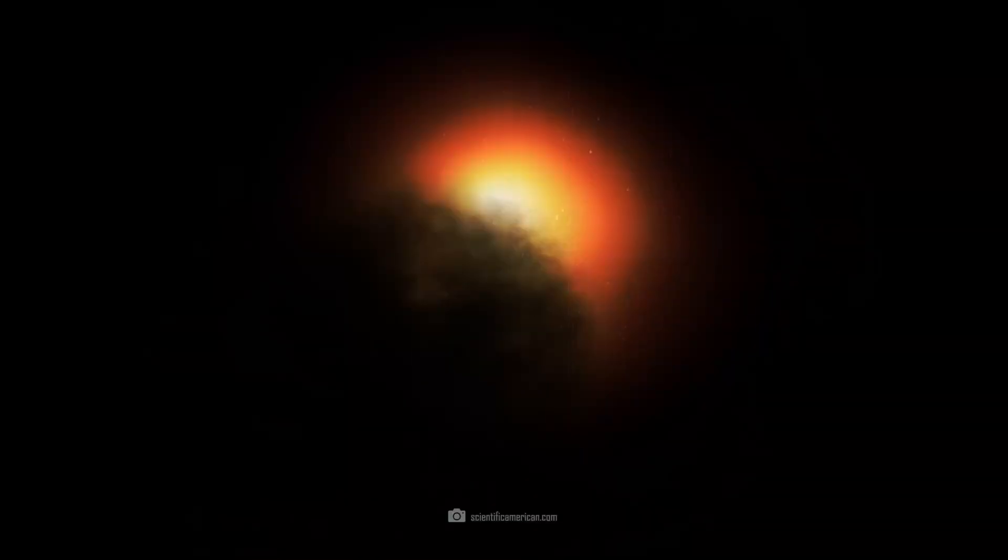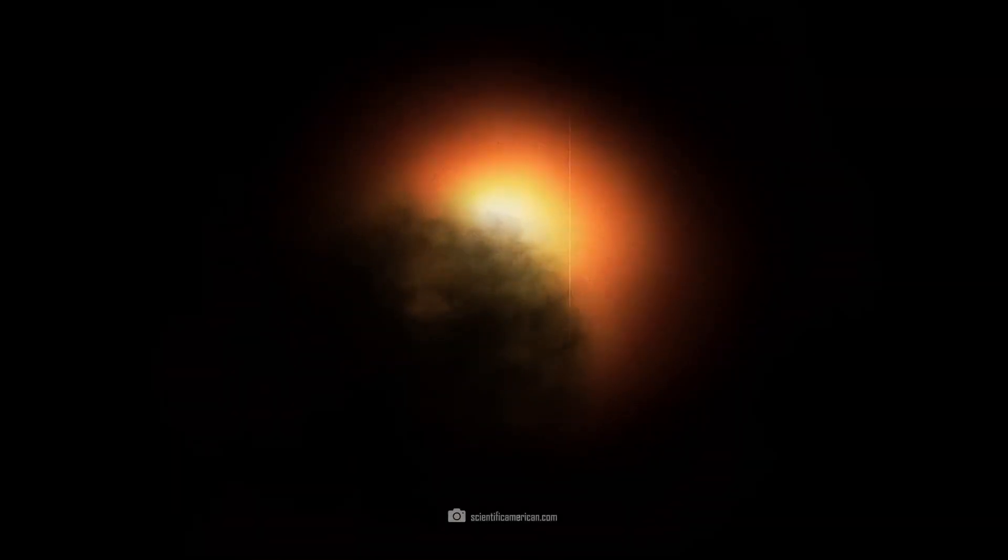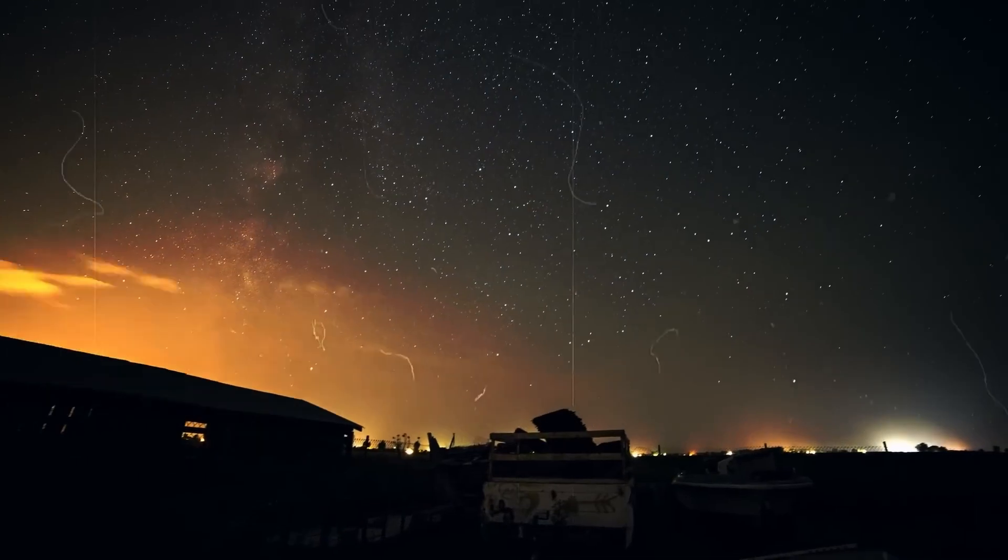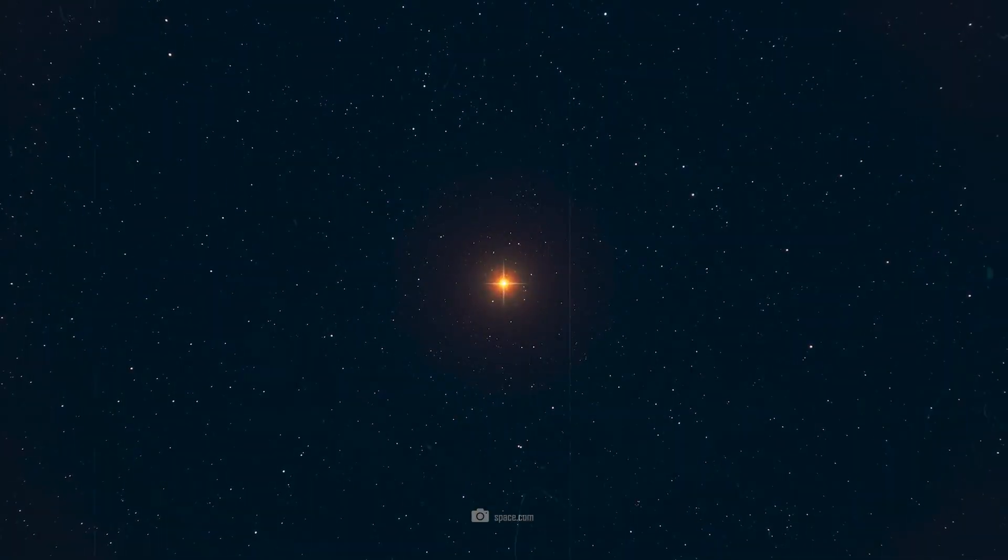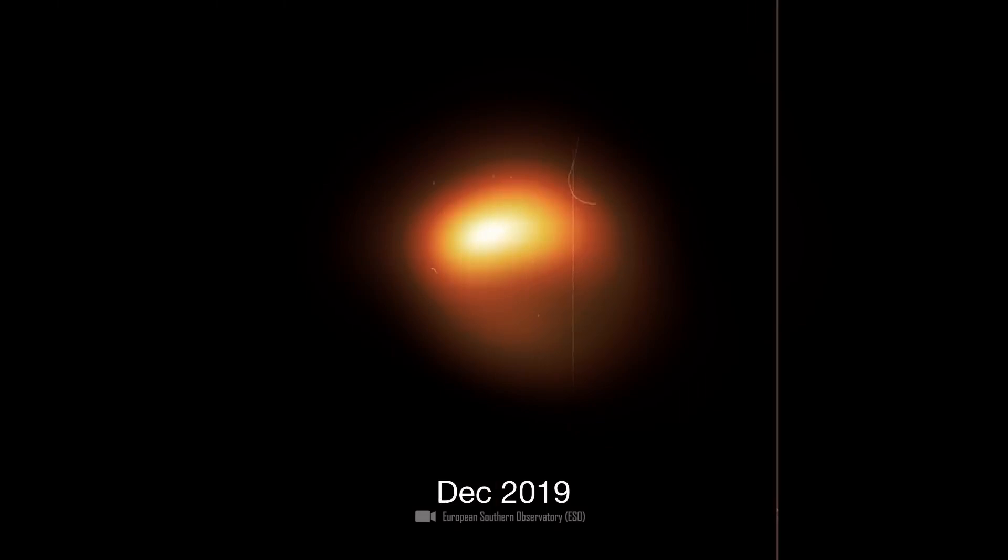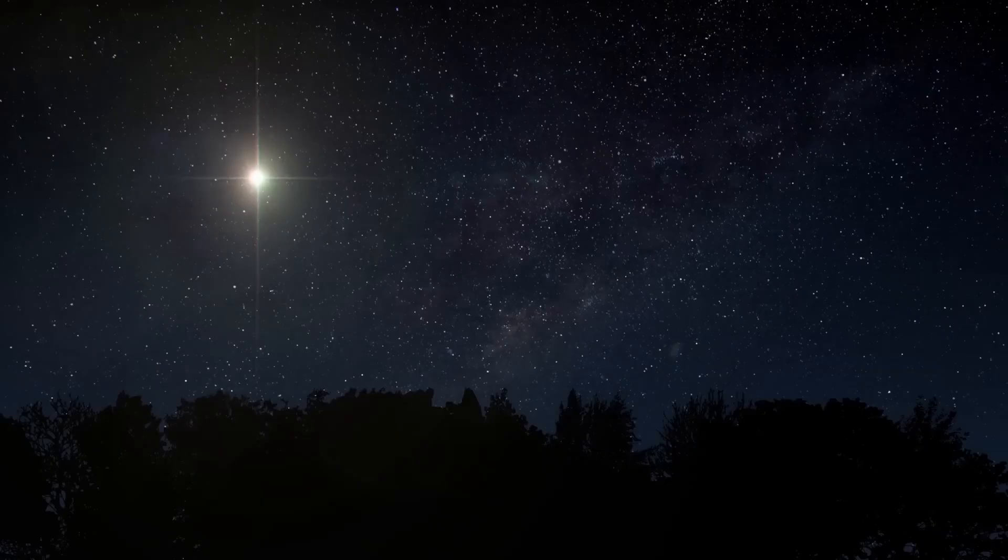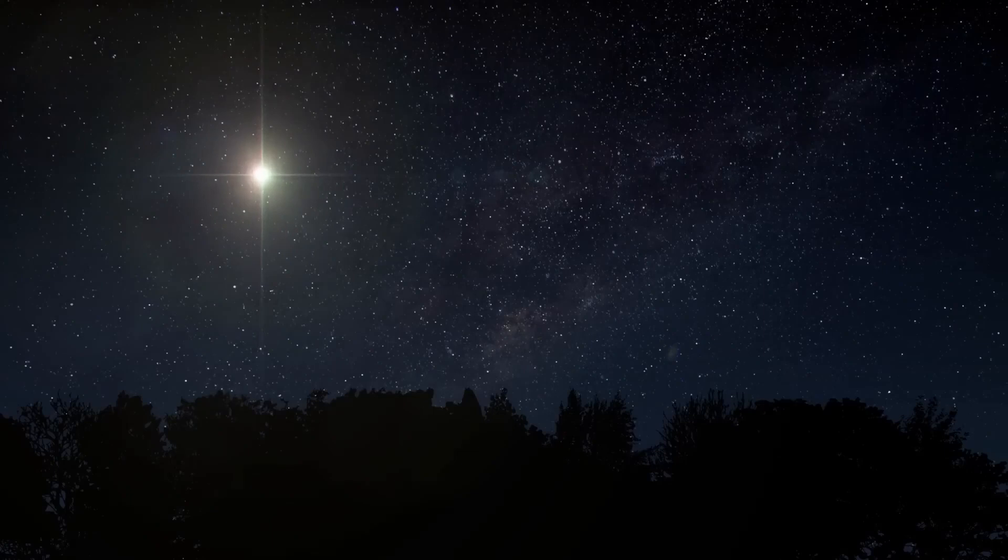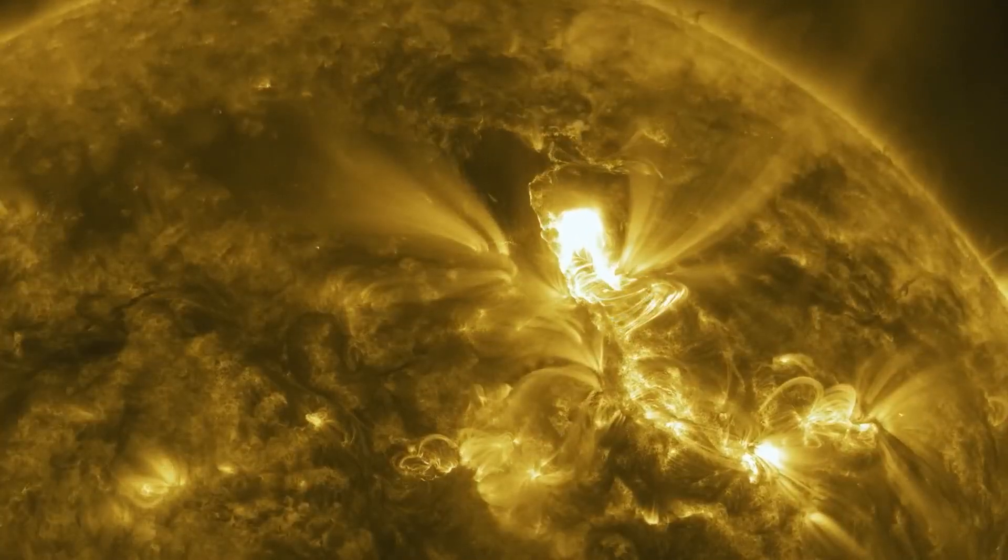The large amount of dust and gas ejected during the dimming had disrupted the normal brightness cycles of Betelgeuse. Detailed investigations have shown that the anomaly took place within a long-known 400-day cycle, during which Betelgeuse brightens drastically, without being associated with an imminent explosion. The 2020 event shortened the normal 400-day cycle to around 200 days.